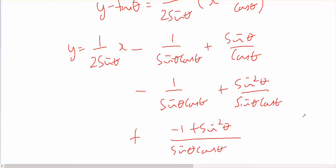Since I know that sine squared theta plus cos squared theta equals 1, therefore sine squared theta minus 1 equals negative cos squared theta.